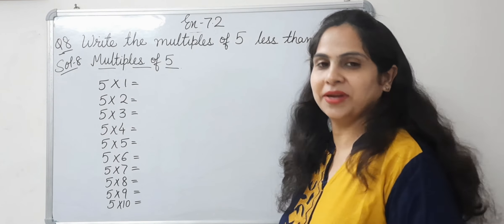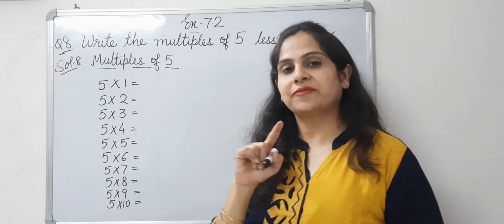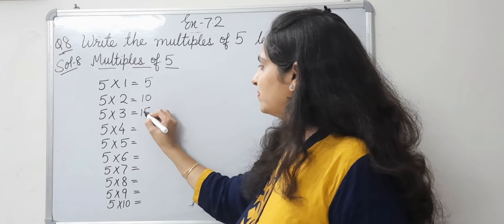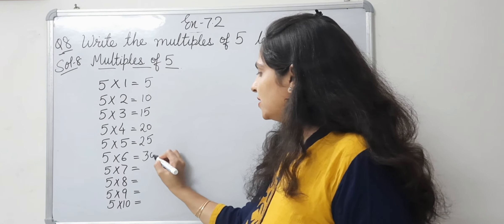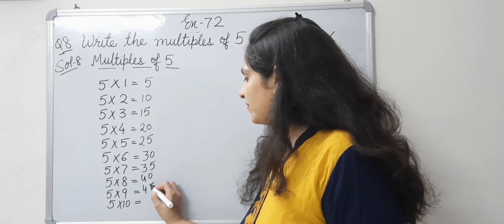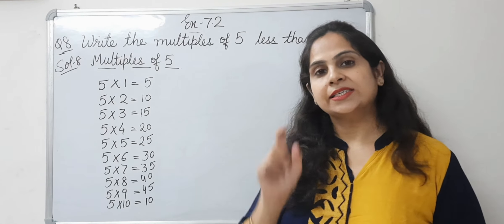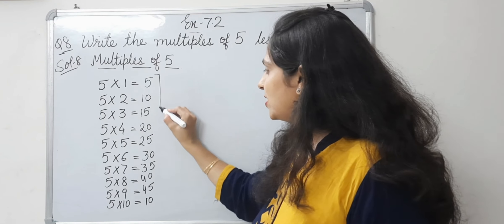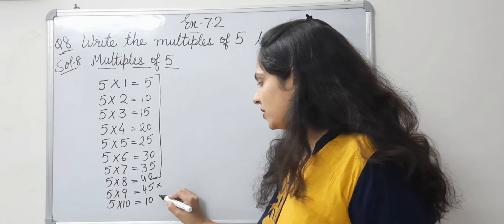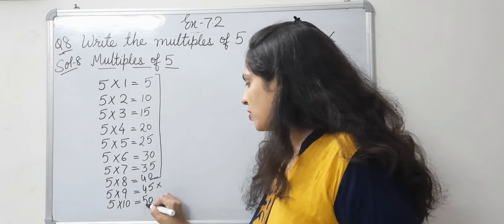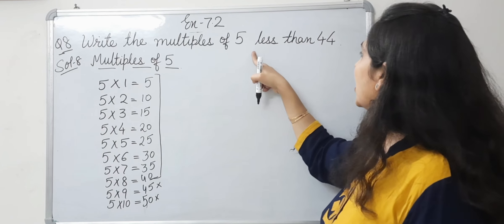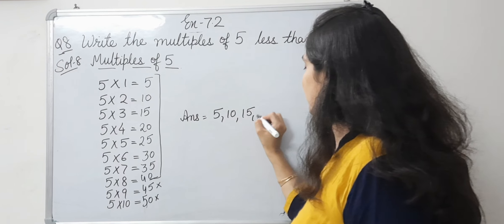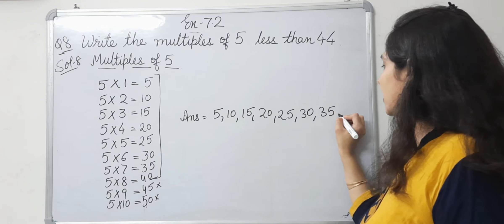Question 8: write the multiples of 5 less than 44. Let's write multiples of 5: 5, 10, 15, 20, 25, 30, 35, 40, 45, 50. We need those less than 44. 45 and 50 are more than 44, so they are excluded. The answer is: 5, 10, 15, 20, 25, 30, 35, and 40.